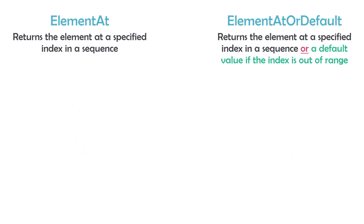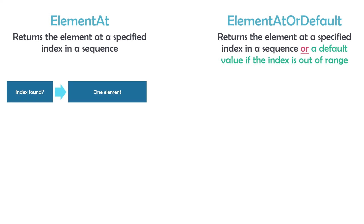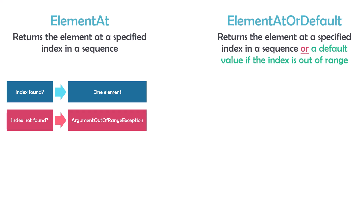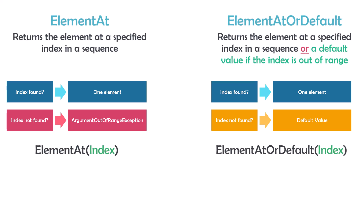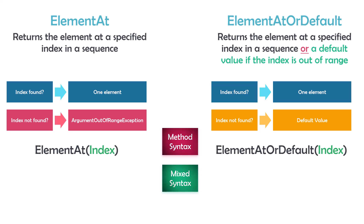Before I switch to UiPath, let me summarize these two operators. ElementAt returns the element at a specific index; if we don't have the index, an ArgumentOutOfRangeException will be thrown. ElementAt or default also returns the element at a specific index, but if we don't have the index, the default value will be returned. Both operators have only one overload — we write the operator with the index in brackets — and can only be used in method syntax or mixed syntax.